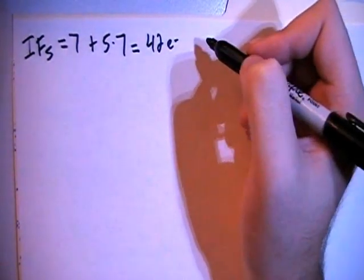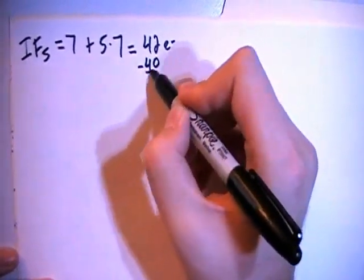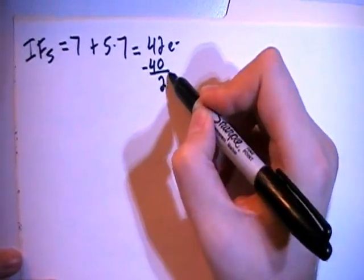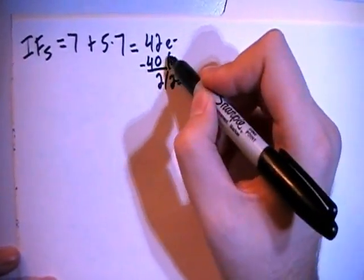So we can start off by subtracting out the largest multiple of 8 which is 40 in this case, which leaves us with two electrons. Divide that by two which gives us one non-bonding pair.